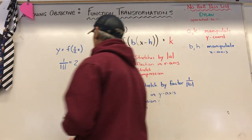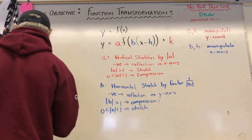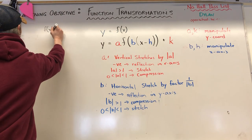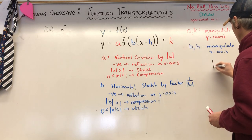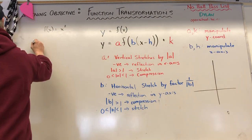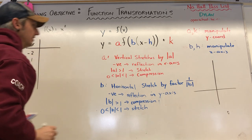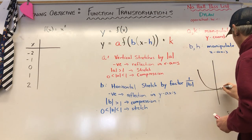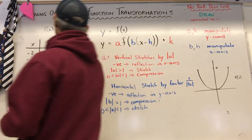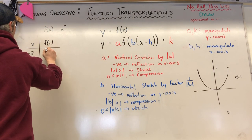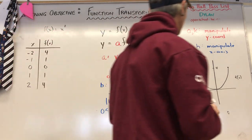Let's use the same function we used in the previous video: f of x equals x squared, our baseline quadratic function. Using a limited domain with x values of negative 2, negative 1, 0, 1, and 2, we get y values of 4, 1, 0, 1, 4 — because negative 2 squared is 4, 1 squared is 1, and so on. So f of x goes from 0 to 4.